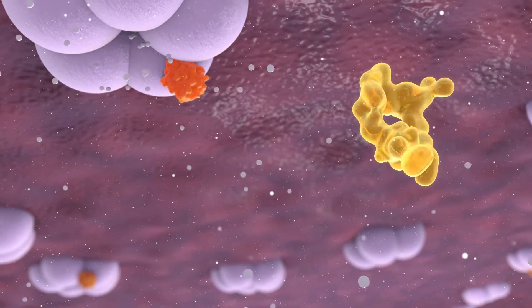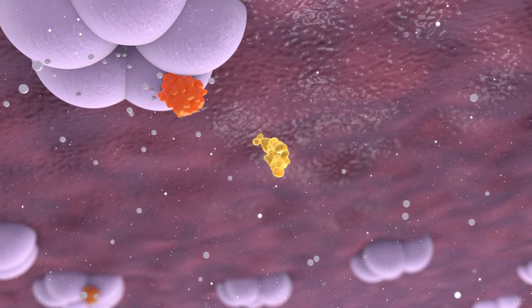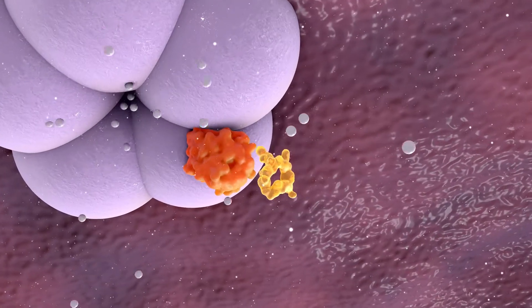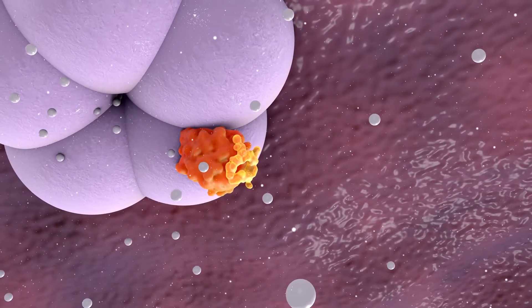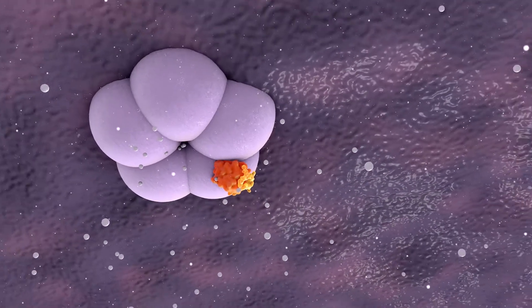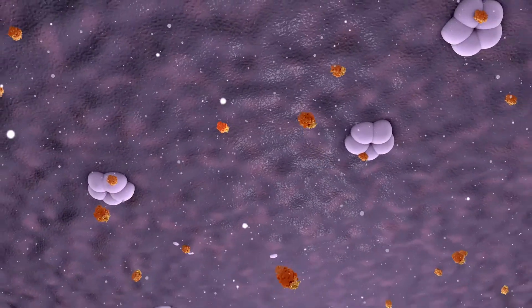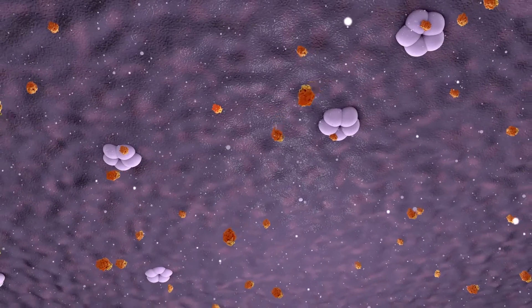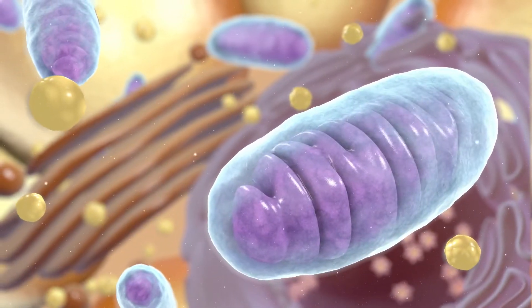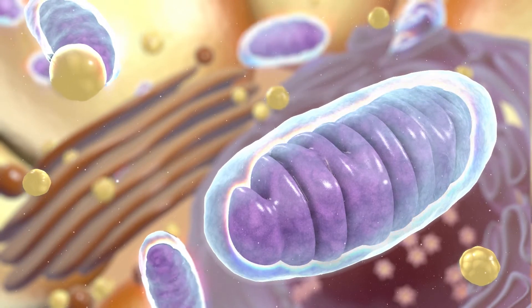For example, CRV431 binds to cyclophilin D which prevents or reverses the formation of pores in the mitochondrial membrane that cause mitochondria to rupture. As a result, mitochondria can resume normal energy production enabling the survival of liver cells.